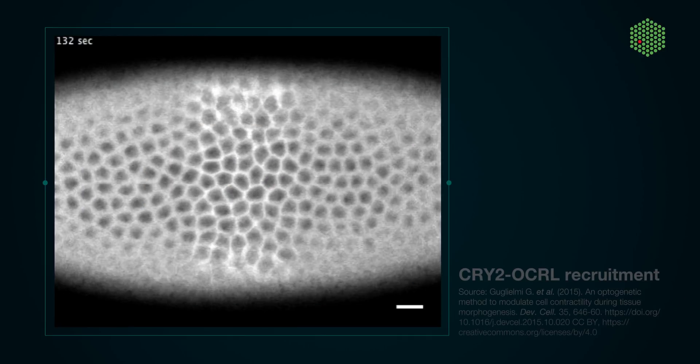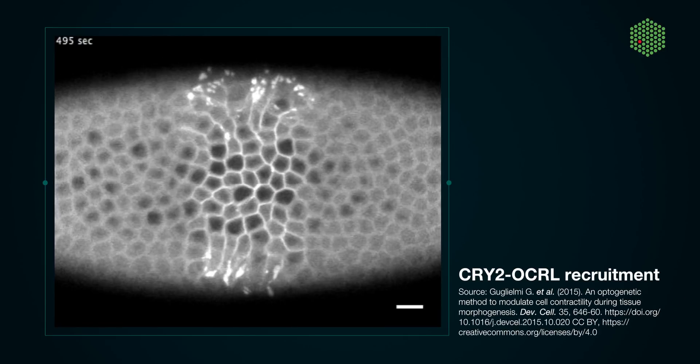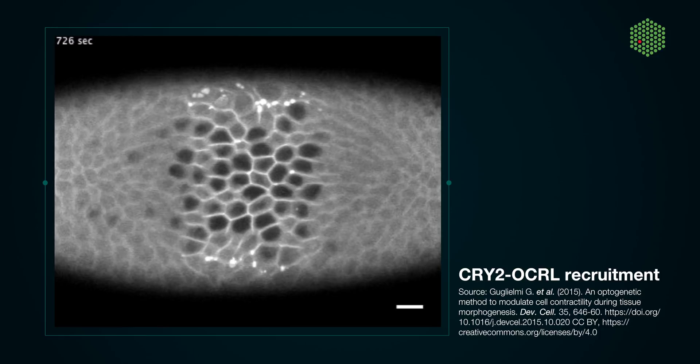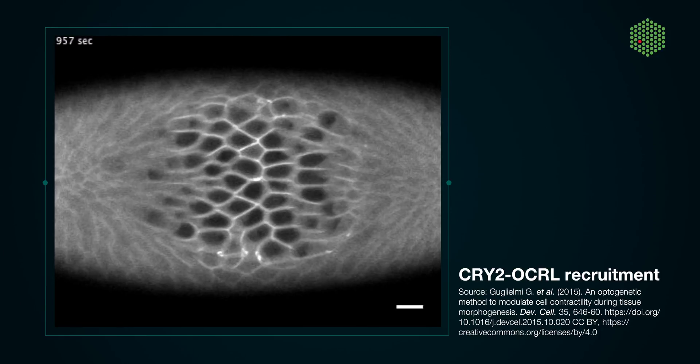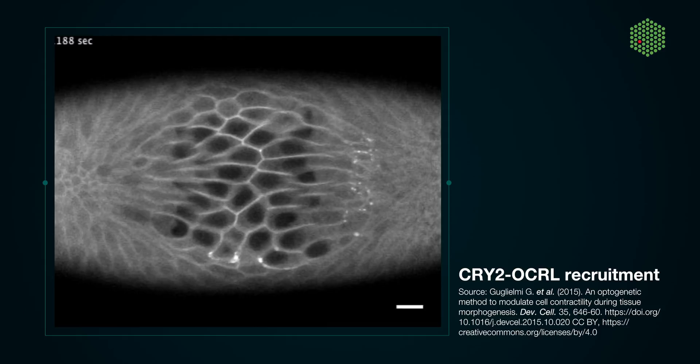Using this technique, we can now specifically modulate cell contractility during morphogenesis of the Drosophila embryo and ask what is the contribution of the particular cell that we are targeting to the given morphogenetic processes that we are interested in characterizing. We can also use this technique to look at the response of the non-activated tissue to such perturbation.